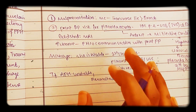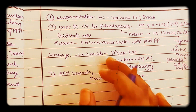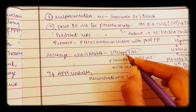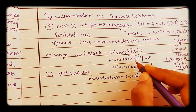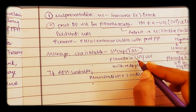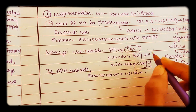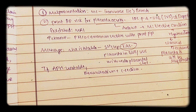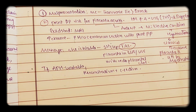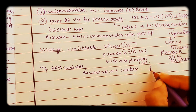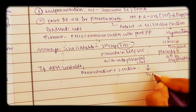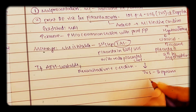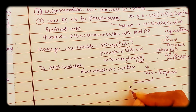In the stable patient, if the TAS shows placenta previa, the investigation of choice is TVS. First we do TAS, and if you see either the lower uterine segment or upper uterine segment with retroplacental clot, then the next choice is TVS. In TVS you have two options: either immediate termination of pregnancy or continuing the pregnancy.